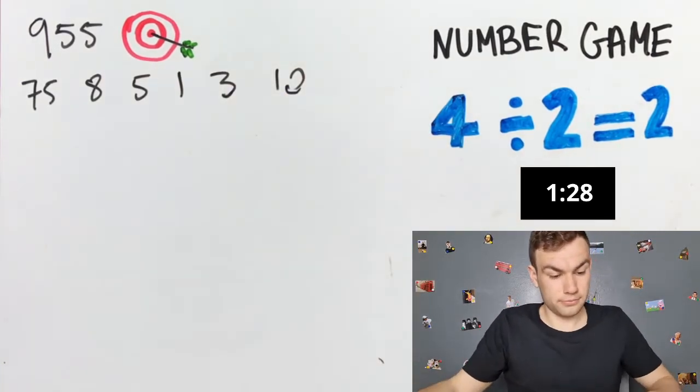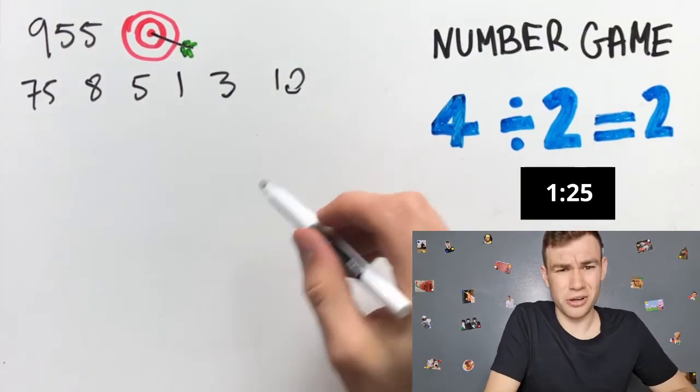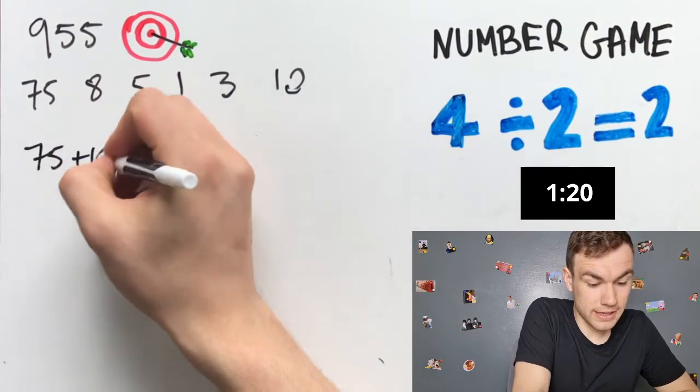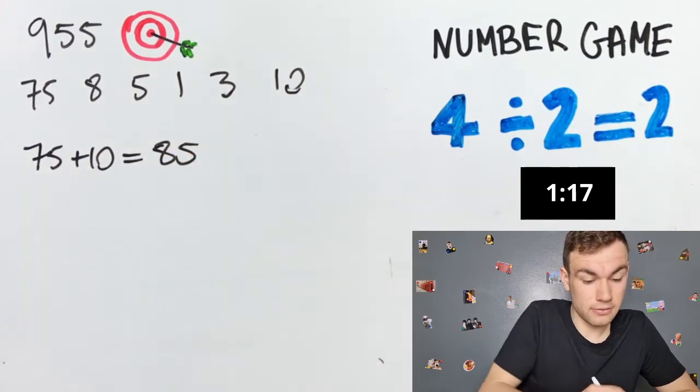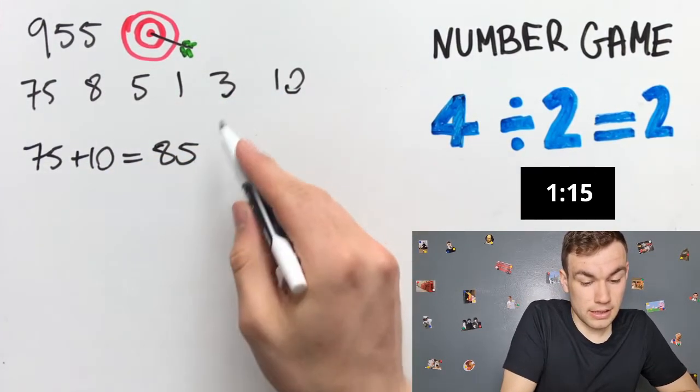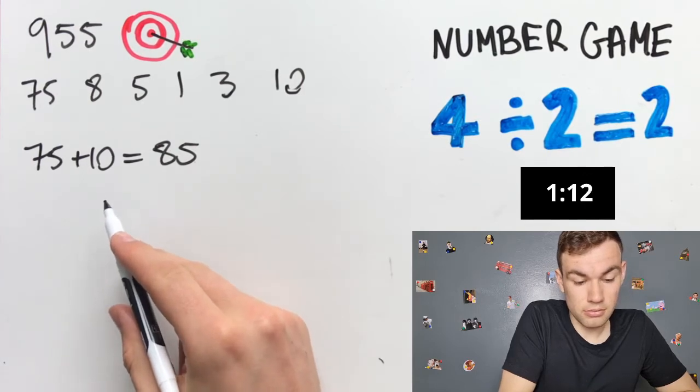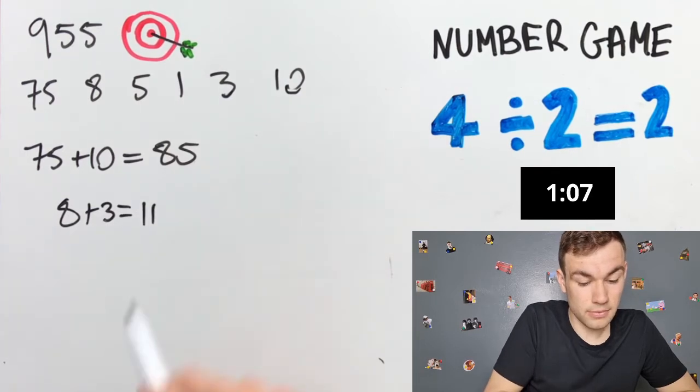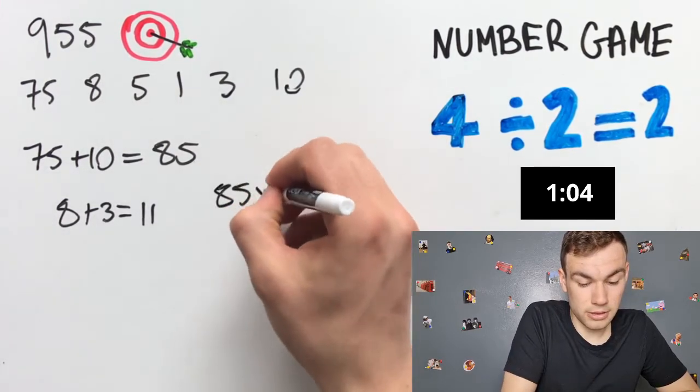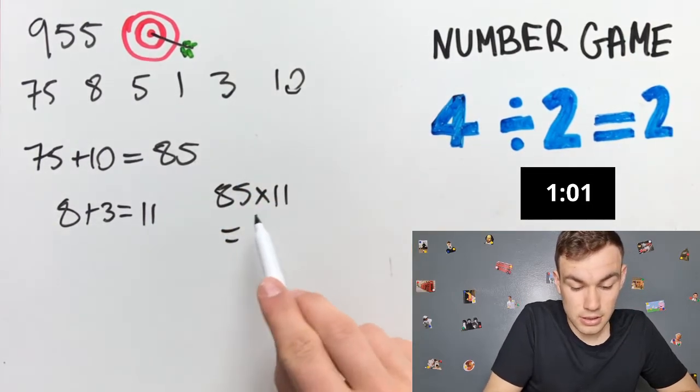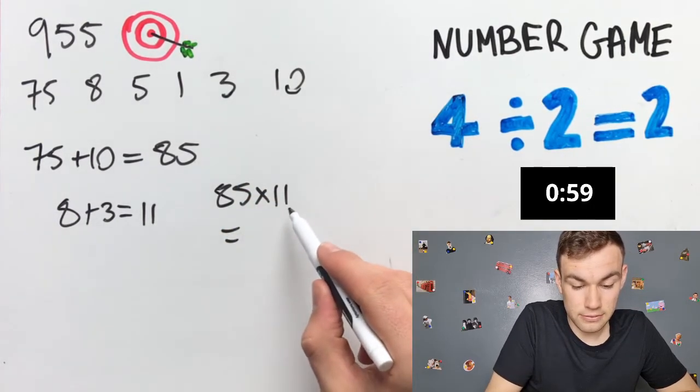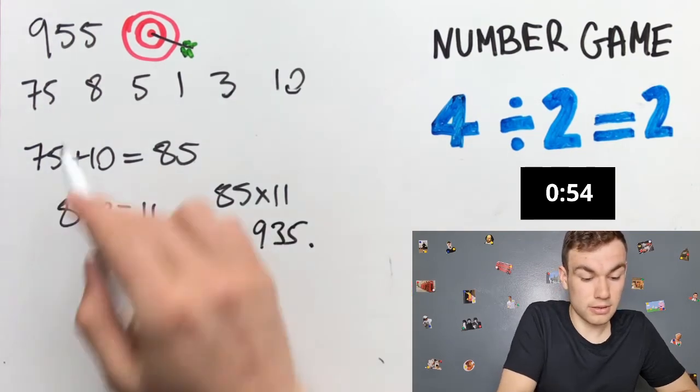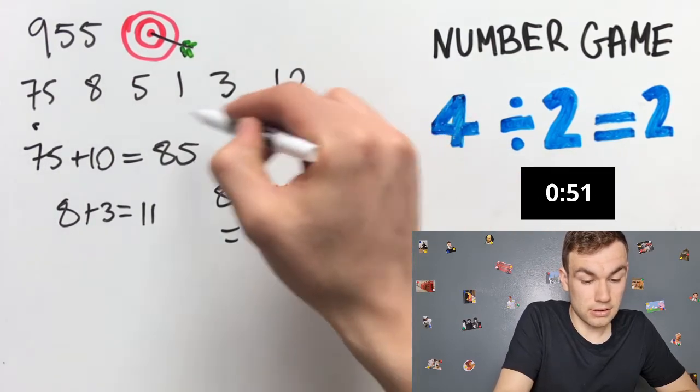This is hard. 75 plus 10 is equal to 85. 8 plus 3 is equal to 11. 85 multiplied by 11 is equal to 850 plus 85, 935 I think.